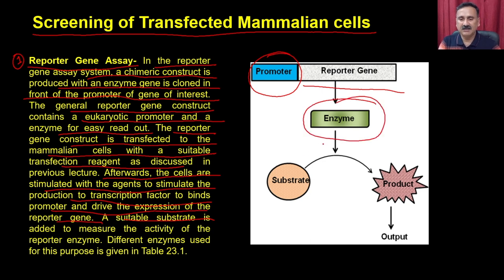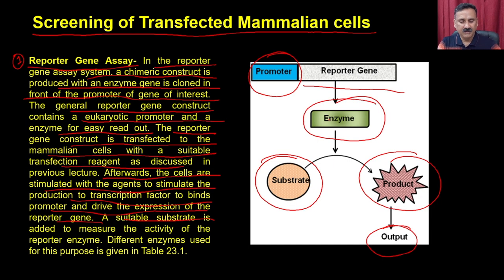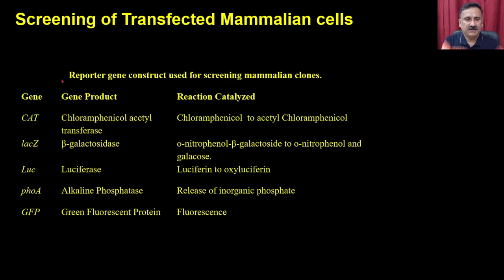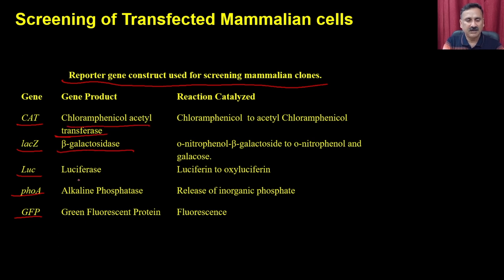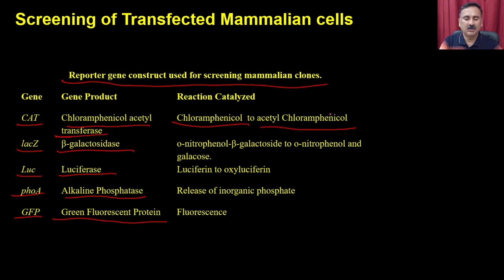Afterwards, the cells are stimulated with an agent to stimulate production of a transcription factor to bind the promoter and drive expression of the reporter gene. A suitable substrate is added to measure the activity of the reporter gene. The enzyme encoded by the reporter gene converts the substrate into a product that can be studied by fluorescence, luminescence, or UV-visible methods. Common reporter gene constructs include CAT, lacZ, luciferase, SEAP, and GFP.